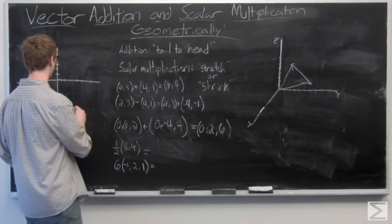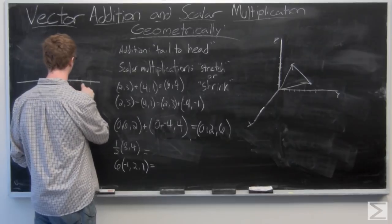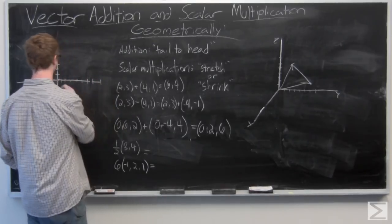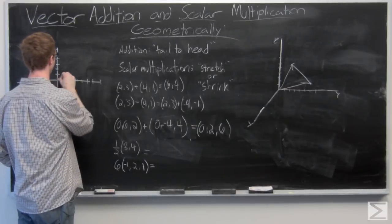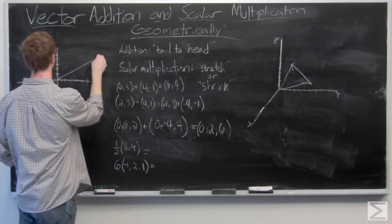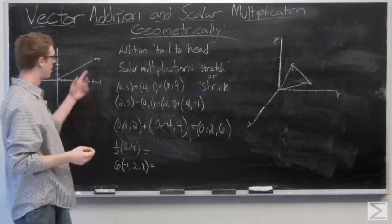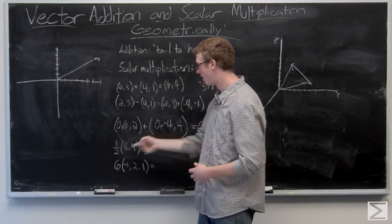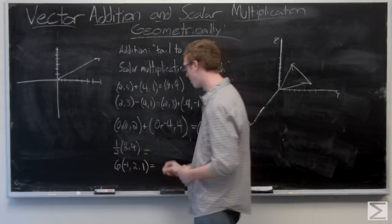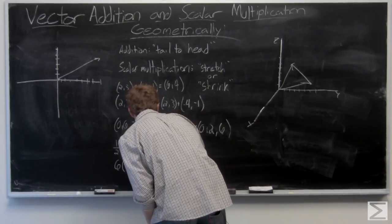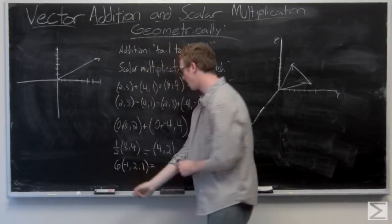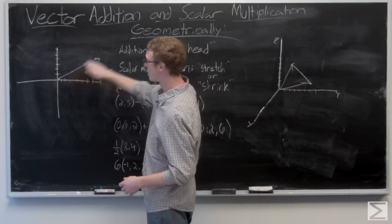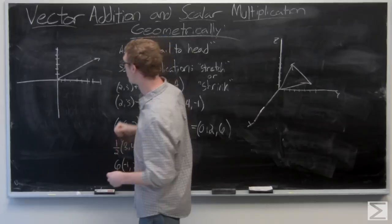I'm just going to draw the vector (8, 4). So here's your vector (8, 4). Now half of (8, 4) - you just multiply each component by one-half. Your result is (4, 2) and you're going to see a shrink from this long vector to a lot shorter vector (4, 2).